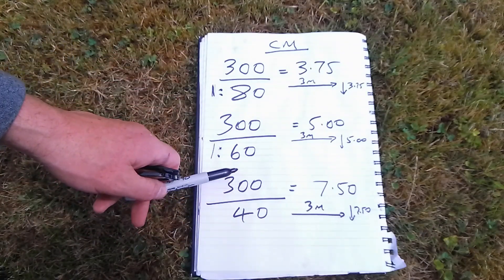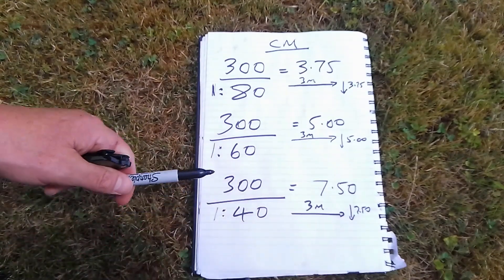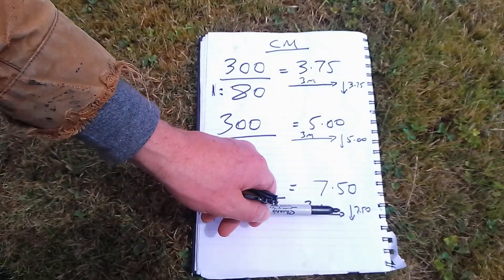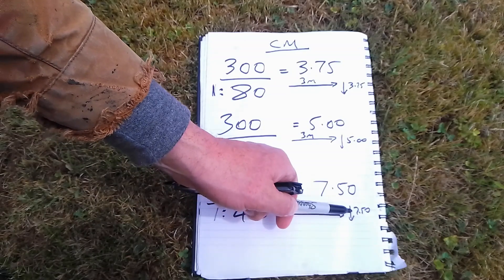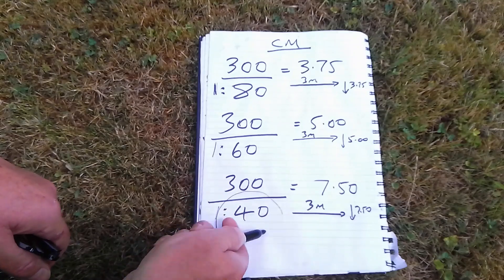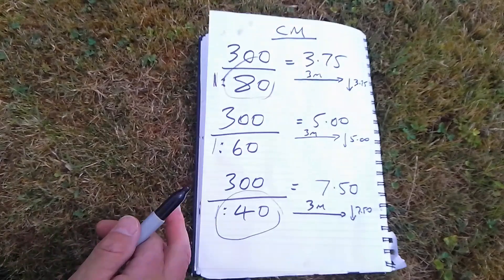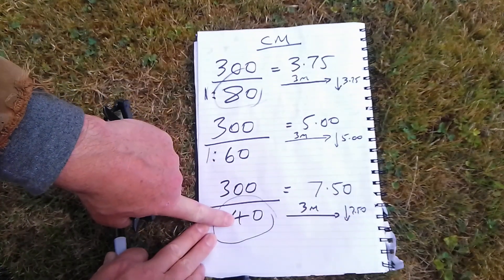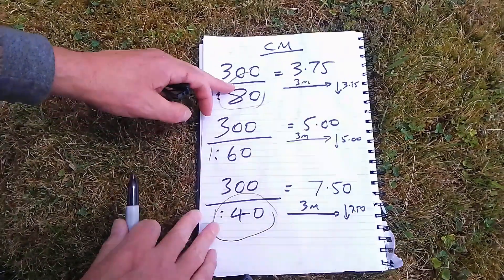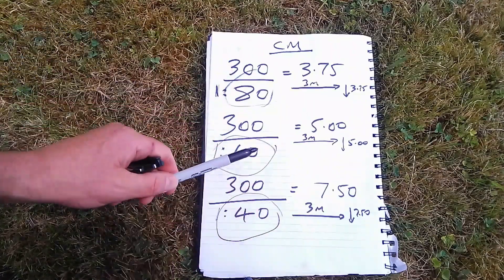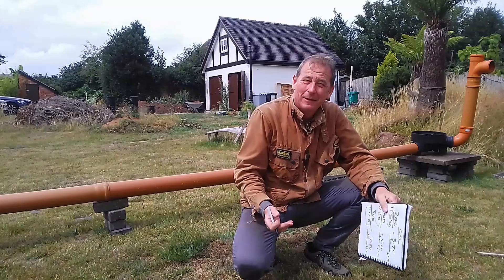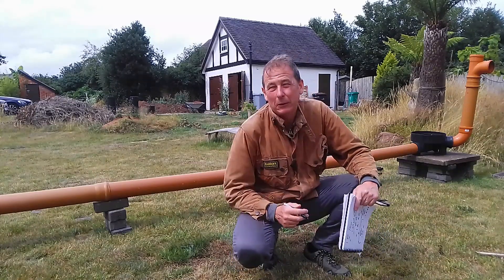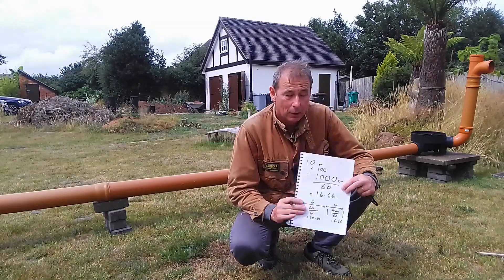For 1-in-40, 300 divided by 40 gives 7.5 centimeters of drop per three meters. Interestingly, the 1-in-40 figure of 7.5 is double the 1-in-80 figure of 3.75 — counter-intuitively, the smaller the number in the ratio, the steeper the drop. My pipe is a quite shallow drop at 1-in-60, giving five centimeters per three meters. My total length of 10 meters consists of a six-meter piece and a four-meter piece, split by the middle inspection chamber.